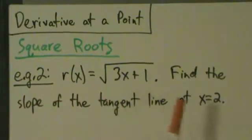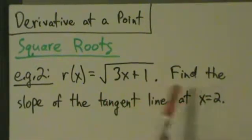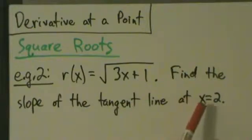But here, that won't always be the case, and that's going to happen here, as we'll see soon. So example 2, r(x) equals the square root of 3x plus 1. We want to find the slope of the tangent line at x equals 2.